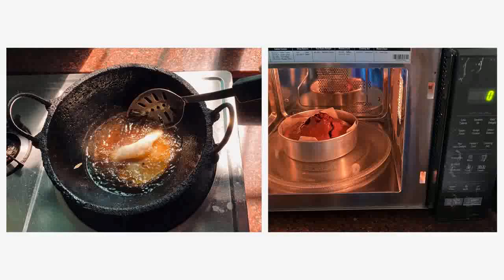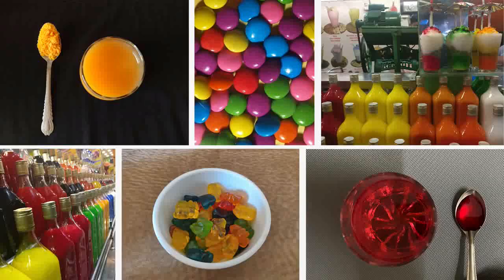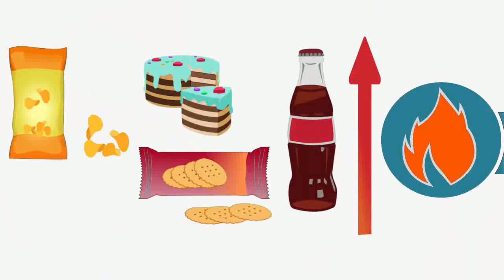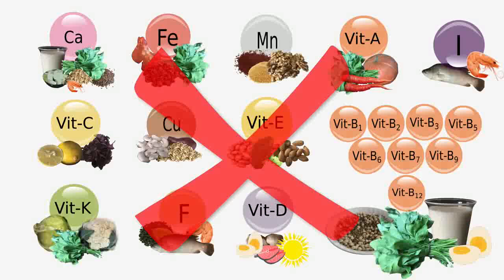Most junk food is usually prepared by frying or baking. Many artificial colors, flavors and preservatives are added to these foods. This is done to enhance the taste, appearance and shelf life of the food. Junk food is high in calories and has none or little amounts of protein, fiber, vitamins and minerals.